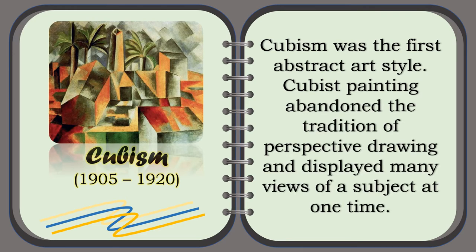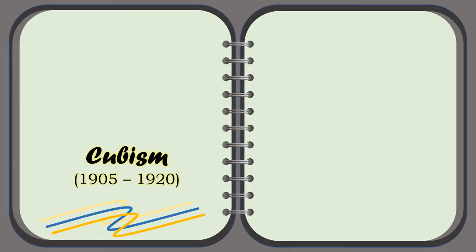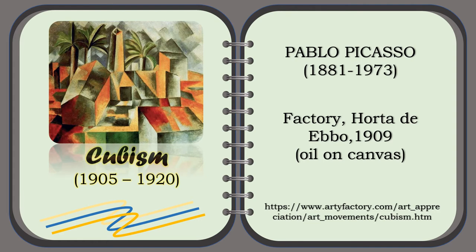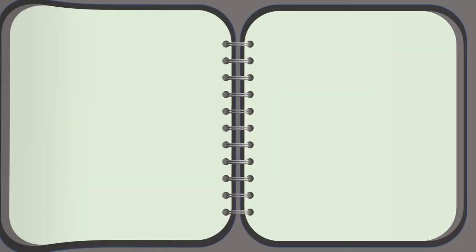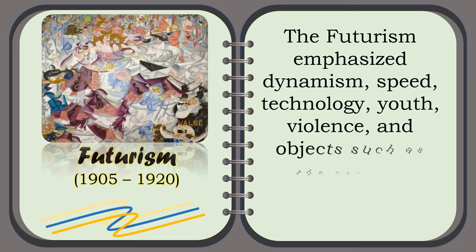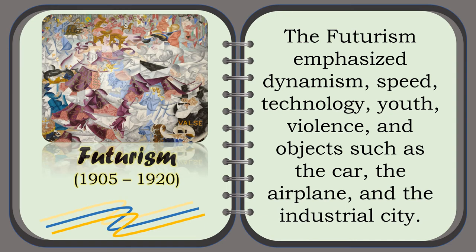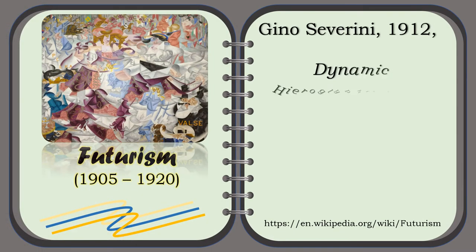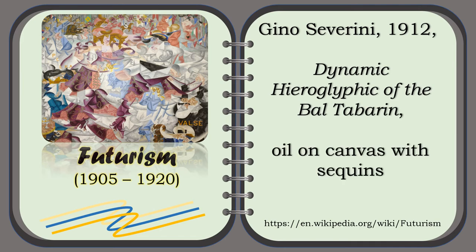For example of Cubism, the painting of Pablo Picasso entitled The Factory, Horta de Ebro, in 1909, oil on canvas. The Futurism emphasized dynamism, speed, technology, youth, violence, and objects such as the car, the airplane, and the industrial city. For example, the painting of Gino Severini in 1912, entitled The Dynamic Hieroglyphic of the Bal Tabarin, oil on canvas with sequins.